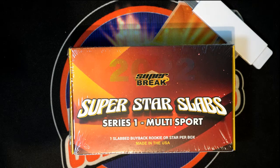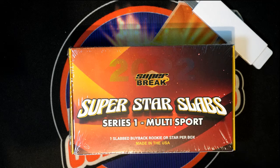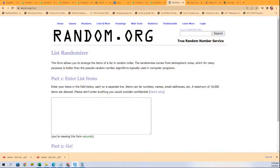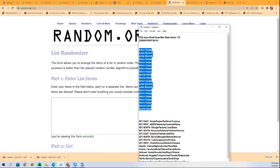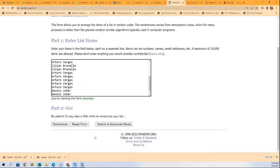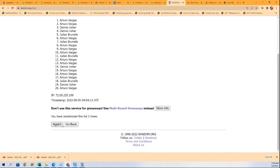Good luck everybody in Superstar Slabs multi-sport with one slab buyback rookie or star in every box. We're going to see what comes out of here in the rip. We're going to start at the random where everybody gets a division seven times through for the owner names, seven times through for the divisions. Good luck in the rip.